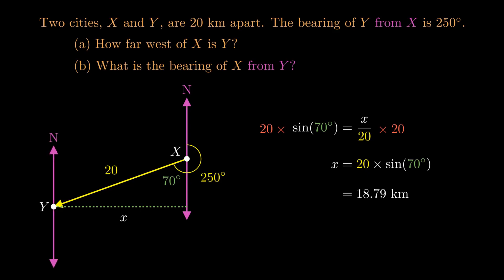Now what does it mean to find the bearing of X from Y? It means now that we've drawn in a north from Y, we want to know how far to spin this north so that we're now pointing towards X. So that angle we've created there.